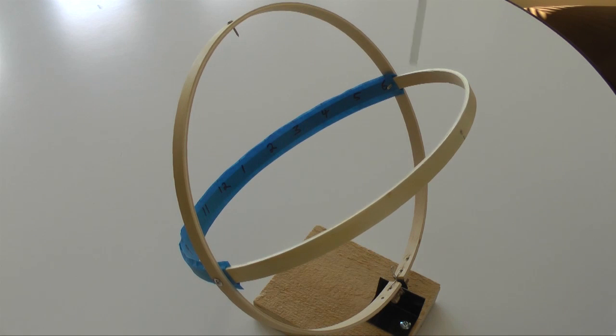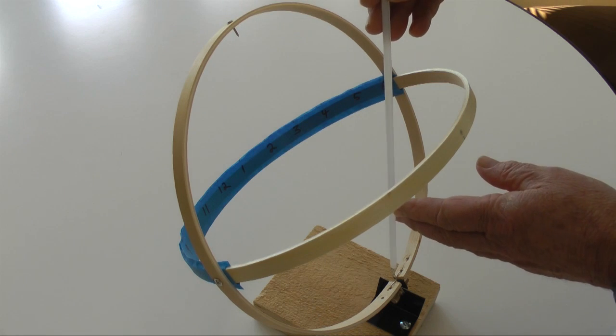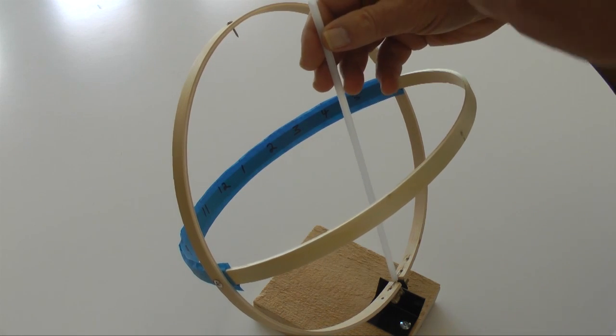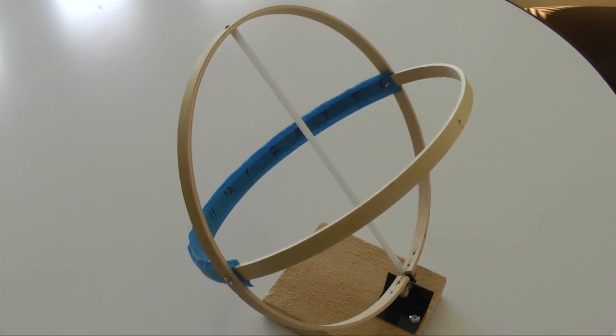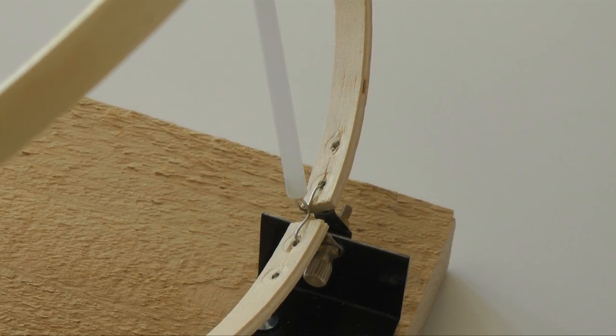We need a gnomon, the axes of this device that cast the shadow. I used a straw cut to fit inside the large hoop. The straw sits here. A screw and wire bracket hold it in place.